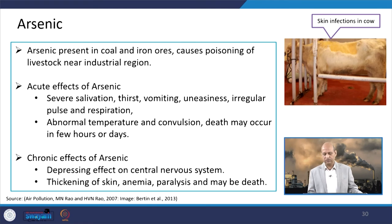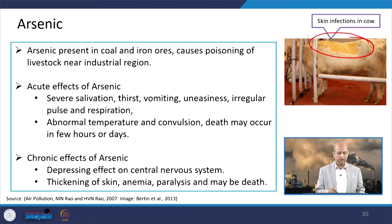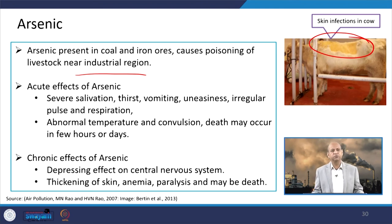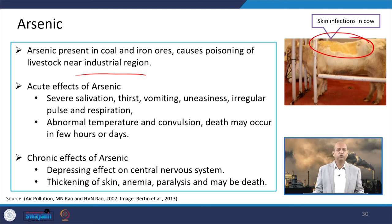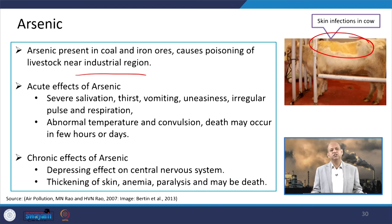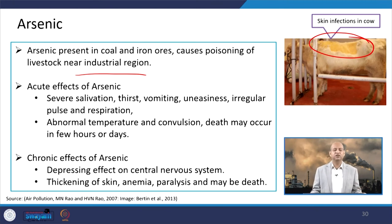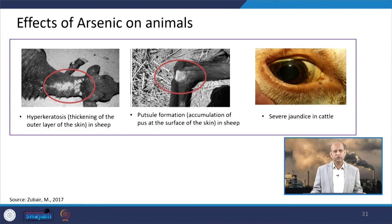Arsenic can cause skin diseases and skin infections. It is present in coal and iron ores and can cause poisoning of livestock near industrial regions. Acute effects of arsenic may result in severe thirst, vomiting, irregular pulse and respiration, abnormal temperature, and even death after certain hours or days. When chronic effects are seen, the central nervous system gets affected — animals behave improperly, are depressed and lazy. Thickening of the skin, anemia, paralysis, and even mortality occur because of chronic arsenic exposure.